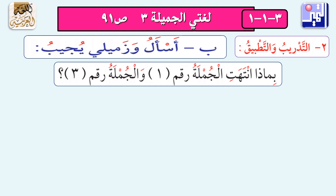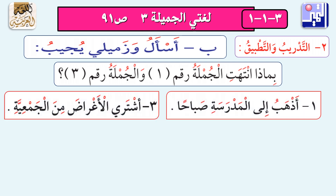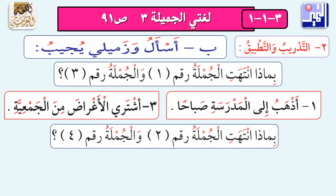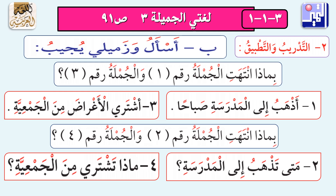أسأل وزميلي يجيب: بماذا انتهت الجملة رقم واحد والجملة رقم ثلاثة؟ الجملة الأولى: أذهب إلى المدرسة صباحًا، انتهت بالنقطة. الجملة رقم ثلاثة: أشتري الأغراض من الجمعية، انتهت أيضًا بالنقطة. وبماذا انتهت الجملة رقم اثنين والجملة رقم أربعة؟ الجملتان الأولى والثالثة انتهتا بالنقطة لأننا نتحدث بكلام عادي، لم نسأل عن شيء.